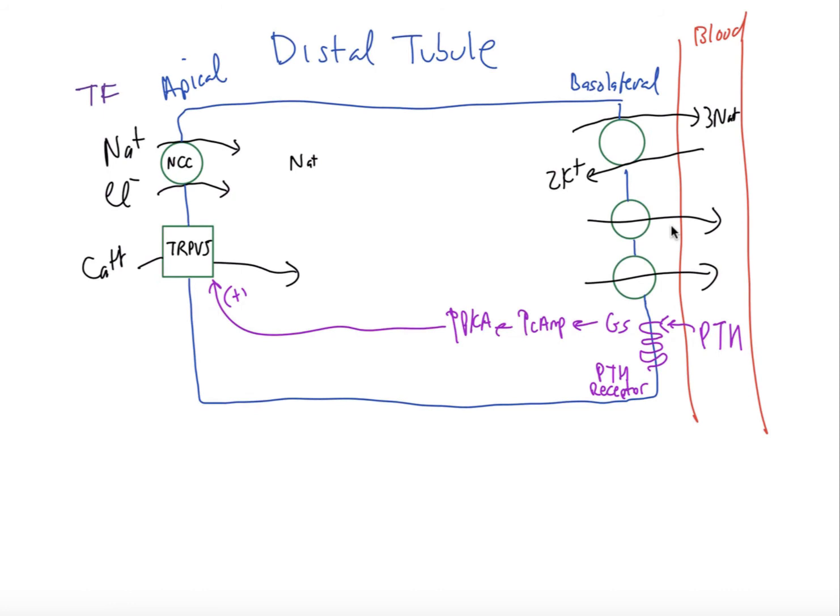If we look at the distal tubule, again, we have the polarized cell and we have the apical side facing the tubular fluid, the basolateral side facing the blood. There's a sodium potassium ATPase pump again, which creates the gradients for sodium and potassium. And we see here on the apical side, we have the NCC, that's the sodium chloride co-transporter, goes down the gradient for sodium, which is created by the sodium potassium pump. Chloride follows suit.